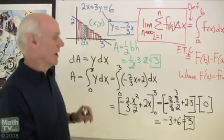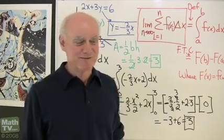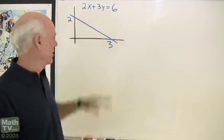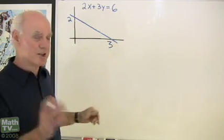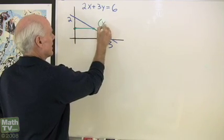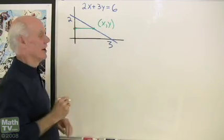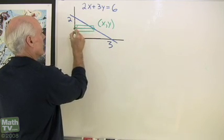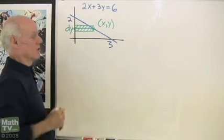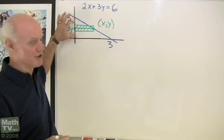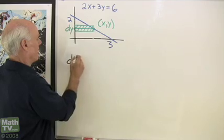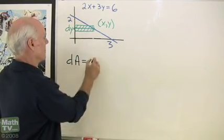I'm going to go back and do it the other way, making my test rectangle horizontal to show we get the same result. I've redrawn the curve 2x plus 3y equals 6. This time I go out to some value of y on the y-axis, go over to the curve to get to the point xy, and take a little element of vertical length to make a horizontal rectangle. Its thickness is dy and its length is x — the distance from the y-axis to the curve.